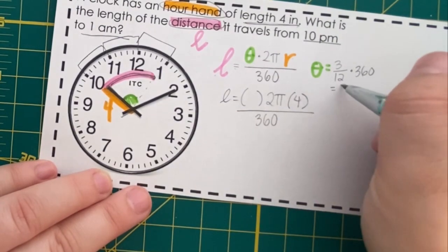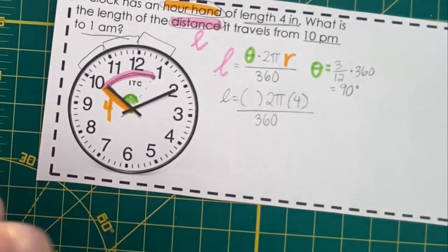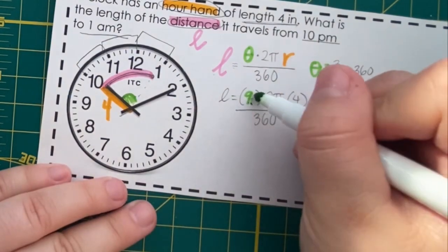That's going to equal 90 degrees. So, theta over here is going to be 90.